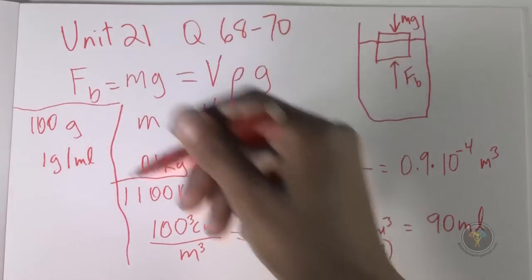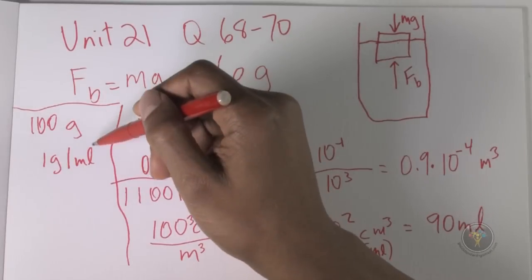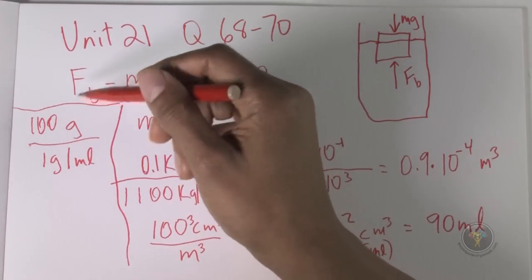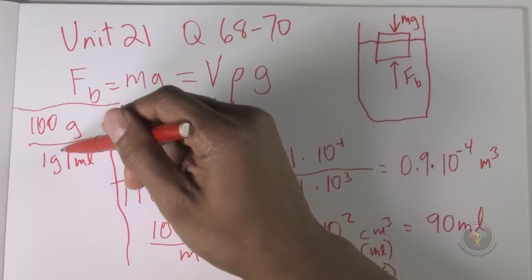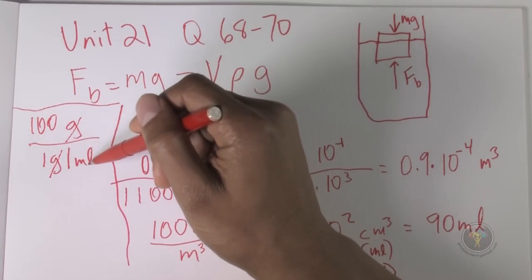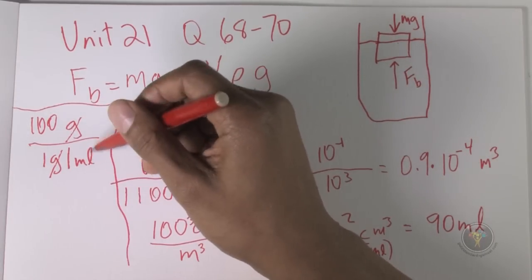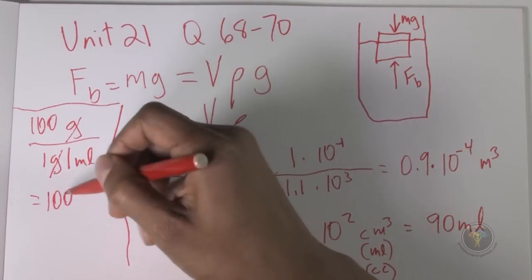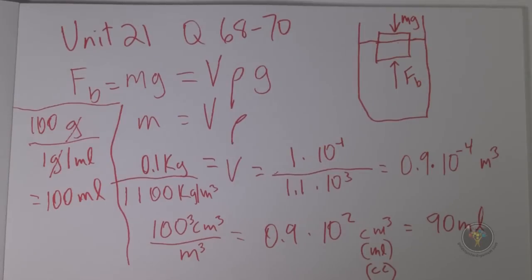We have 1 gram per milliliter, we have 100 grams. Now it's very easy to say what the volume is. 100 grams over 1 gram per milliliter, grams cancel, this equals 100 milliliters. So 100 milliliters once the water melts is added to figure 1 which was 400, so we get 500 milliliters. So 69 is C.